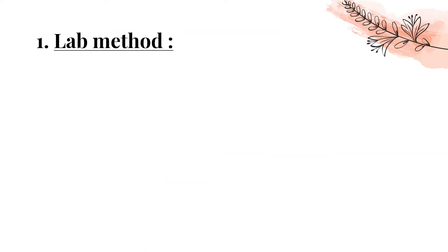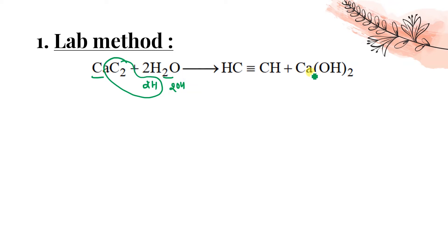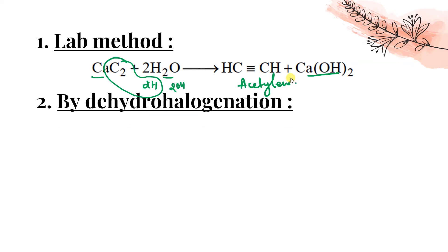The lab method to prepare acetylene: when calcium carbide is heated with water, it gives C₂H₂ (acetylene). The 2H combines with C₂ to form C₂H₂, and Ca combines with 2OH to form Ca(OH)₂. This is the lab method.